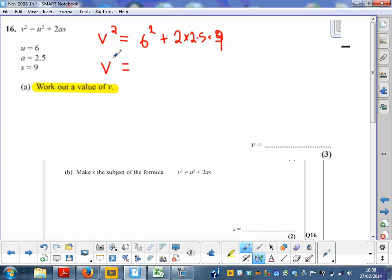So v squared is 6 squared which is 36 plus. Now, 2 times 2.5 is 5 and 5 times 9 is 45. Now when I add 36 plus 45 is equal to 81. So I know that v squared is 81.